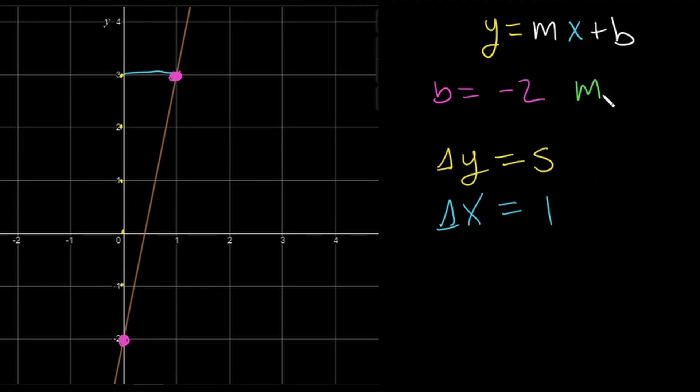So m is equal to 5. So now we can write our equation in slope-intercept form. y is equal to 5x minus 2.